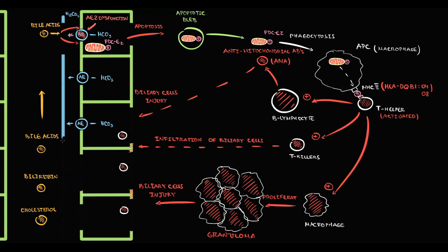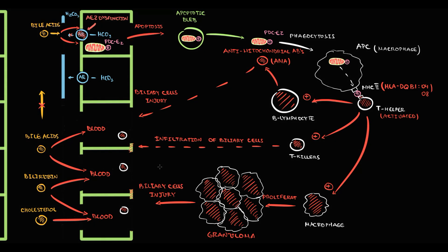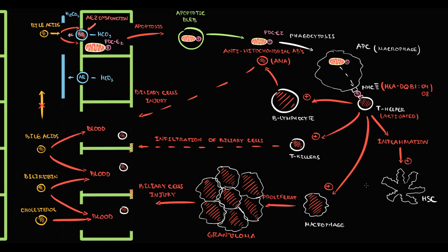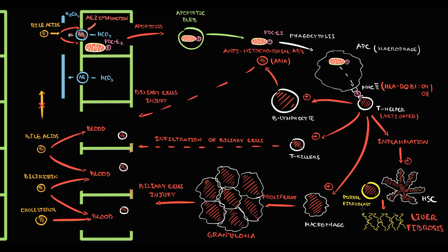This massive pro-inflammatory cascade results in destruction of biliary epithelial cells. With their destruction, bile components — bile acids, bilirubin, and cholesterol — leak into the blood, and their levels progressively increase. Additionally, massive inflammation in liver tissue activates hepatic stellate cells and portal fibroblasts, which begin to produce massive amounts of collagen. Progressive deposition of collagen molecules causes liver fibrosis, which in turn causes cirrhosis.